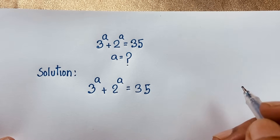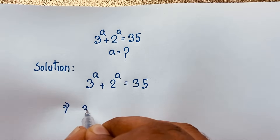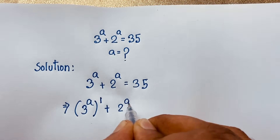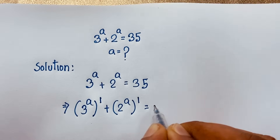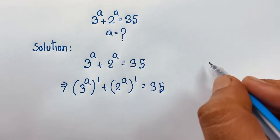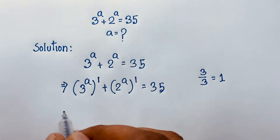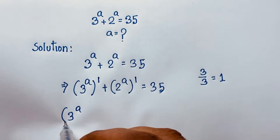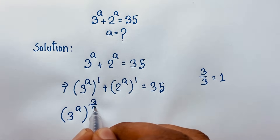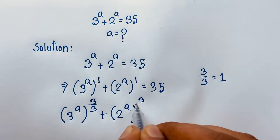Here is the formal solution. We rewrite 3 to the power a as 3 to the power a, and whole to the power 1, plus 2 to the power a, whole to the power 1, equals 35. Now we note that 3 divided by 3 equals 1, so we can write this as 3 to the power a times 3 over 3, plus 2 to the power a times 3 over 3, equals 35.